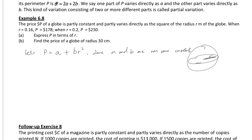That's why we have two sets of information. The first is when P equals 178, r equals 0.16. Because we have two constants, if you want to find P in terms of r, you need two pieces of information in order to eliminate them. So when P equals 178 and r equals 0.16: 178 equals a plus 0.16 squared times b. This is equation one.